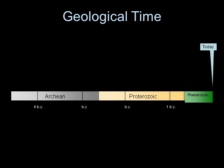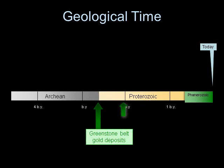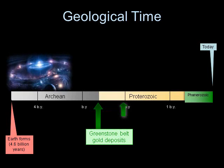Mesothermal veins have formed from the earliest period of Earth's history right up until today. However, the majority of greenstone belt gold deposits formed in two main pulses at the end of the Archean and in the early Proterozoic — around 2.7 billion years ago and 2.1 billion years ago. Although these sound like very long times ago, these deposits formed only about halfway through the Earth's history. The Earth originally formed about 4.6 billion years ago, dinosaurs evolved only 150 million years ago, and humans barely register on this scale.